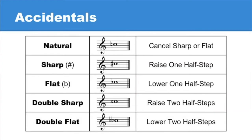So let's quickly go over what we've learned thus far. A natural cancels any sharp or flat in a measure, returning the note to its natural state. A sharp raises a note by a half step, while a flat lowers a note by a half step. A double sharp raises a note by two half steps, while the double flat lowers a note by two half steps.